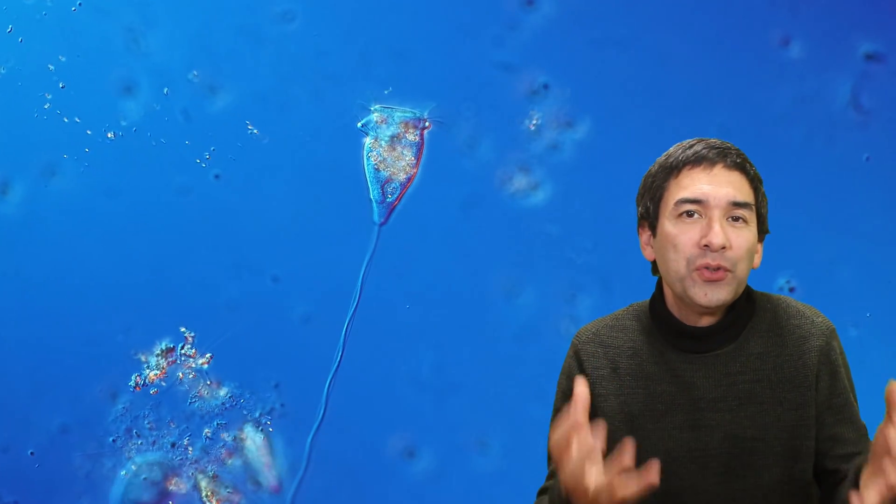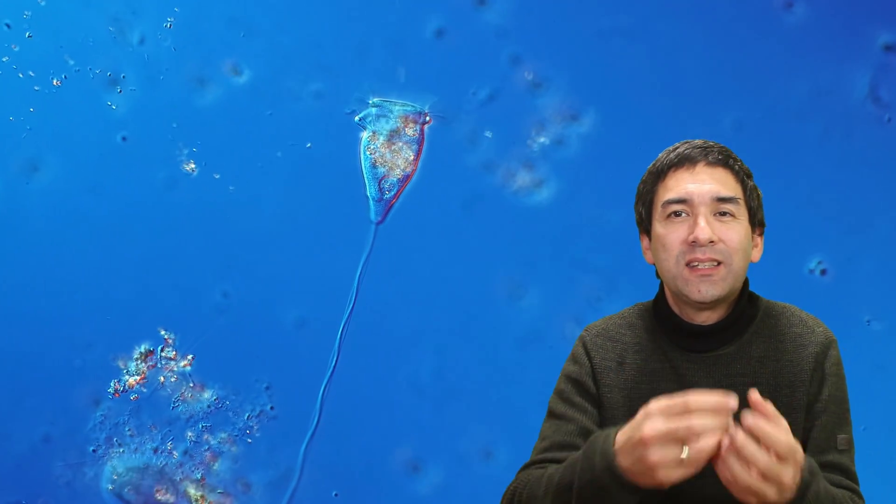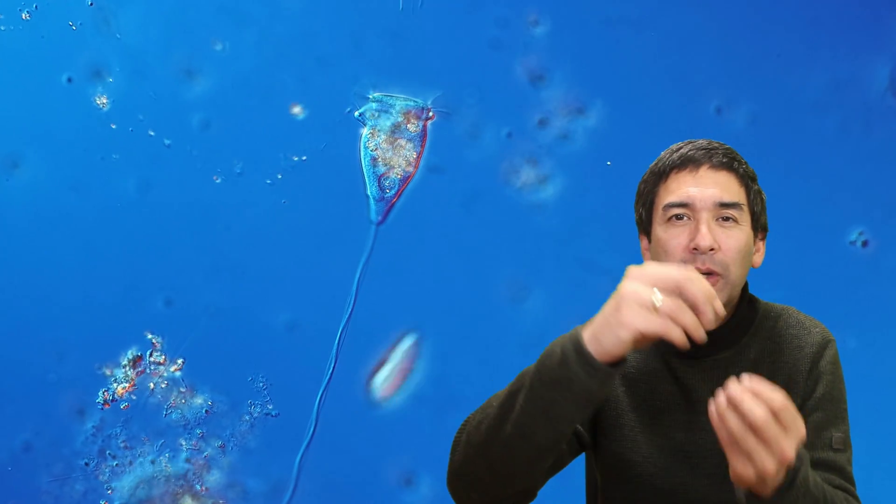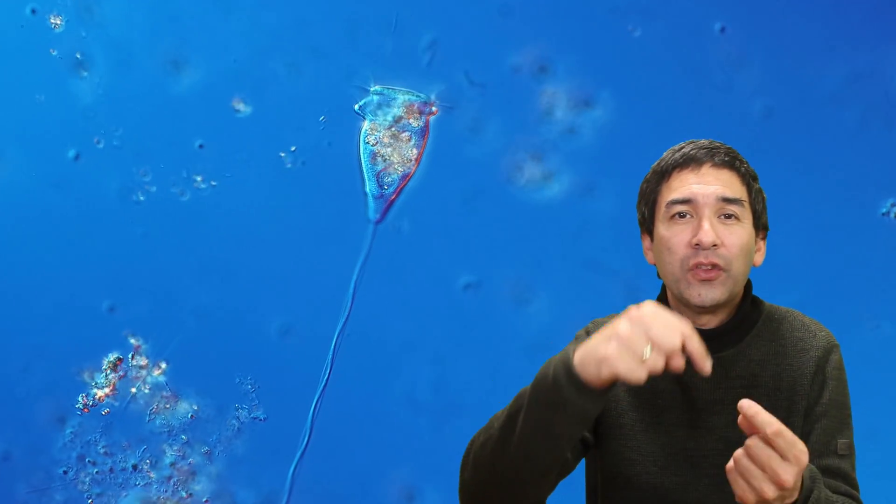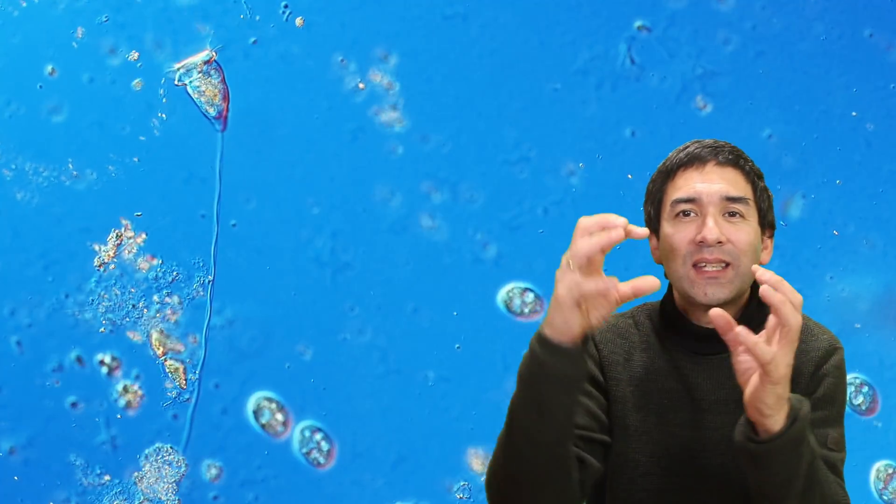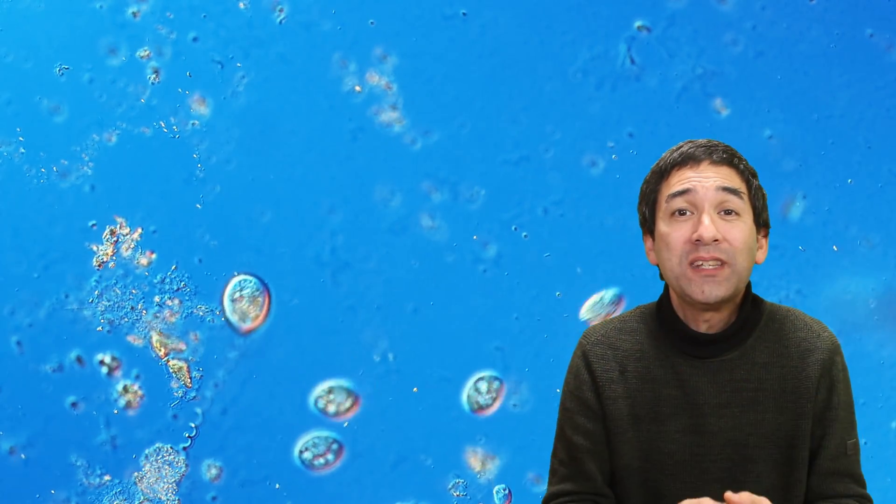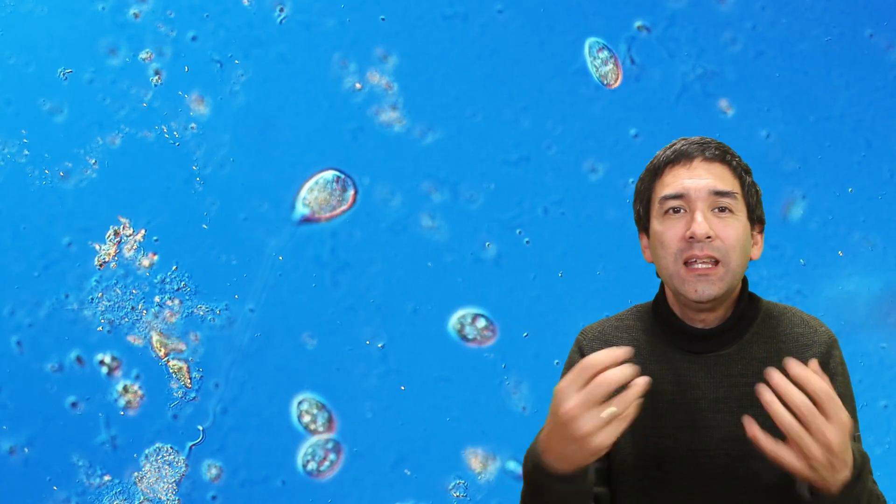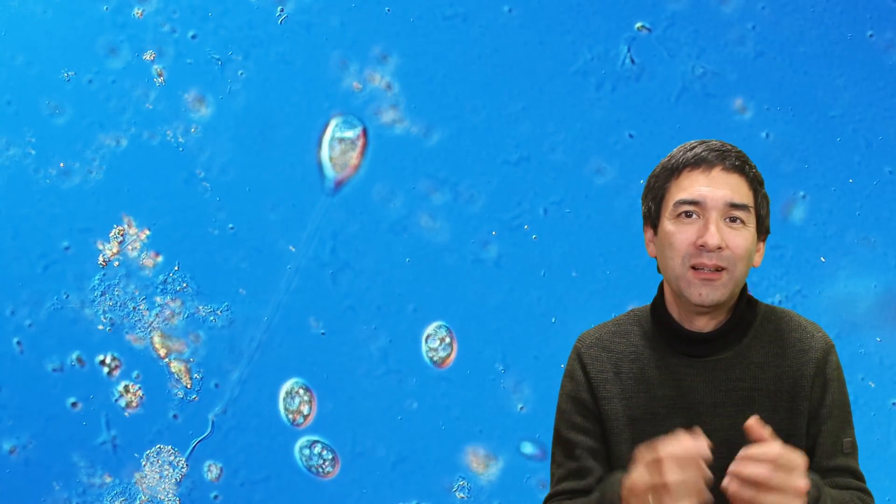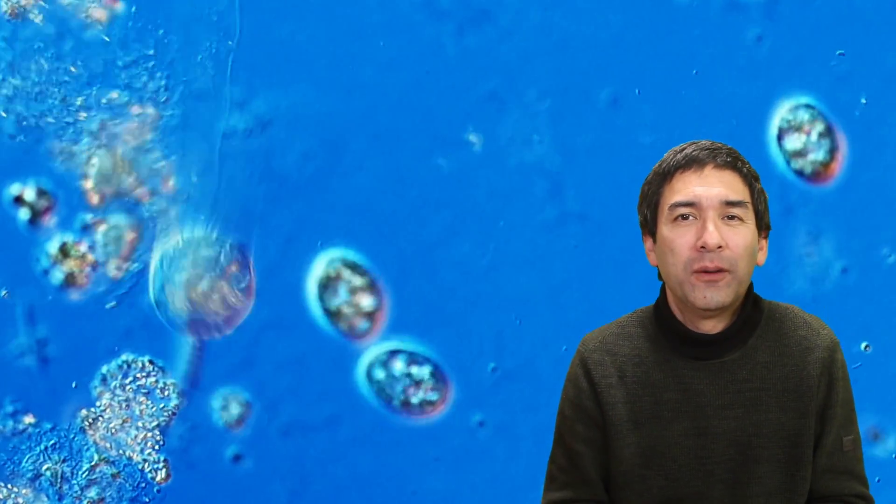And one of the most unique things about Vorticella is its stalk. This is a long, thin structure that connects the cell body to a surface where it anchors to. And this stalk is able to rapidly contract if something touches the cell. It's, of course, a way of protecting itself.